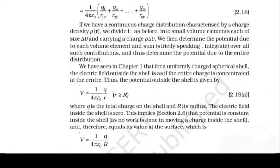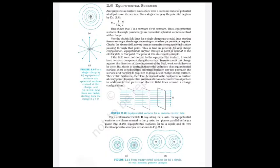The electric field inside the shell is zero, which implies potential is constant inside. No work is done in moving a charge inside the shell, so the potential inside equals its value at the surface: V = k·q/R.